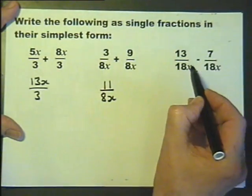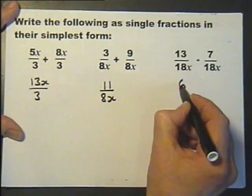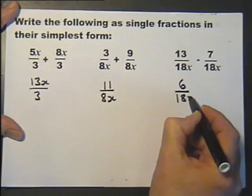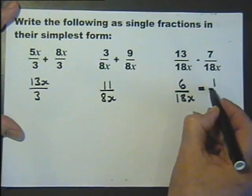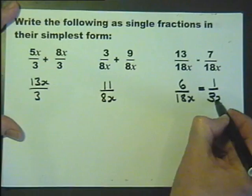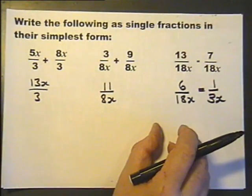Subtraction, denominators are the same. So 13 minus 7 will give me 6. But this will, in fact, cancel, because 6 goes into 6 once, and 6 goes into 18 three times. All simplified fractions where possible. In other words, cancel.